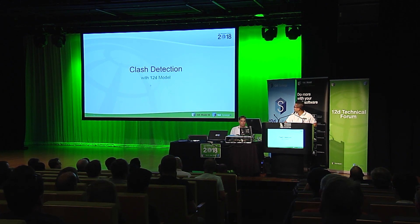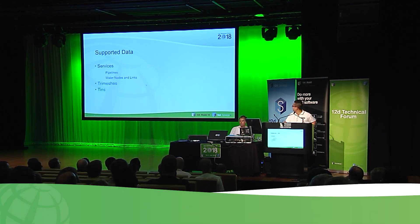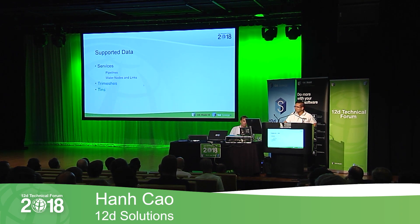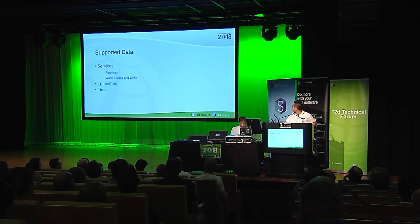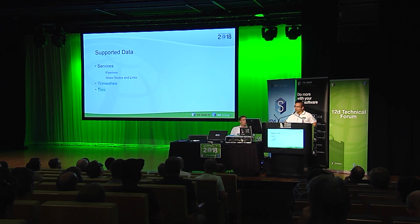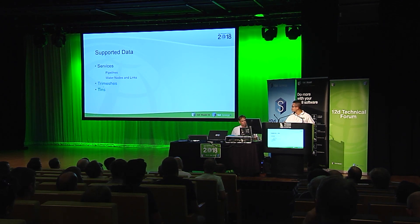You have seen Dylan doing a bit of class detection, so I will be moving very quickly here. In V12 we have the supported data services — pipelines, water nodes and links. Toward the end of V12, as of last year we put in the checks for trimesters, and then in V14 we're going to do tins. So basically we cover all the 12D beam object types in our class detection.